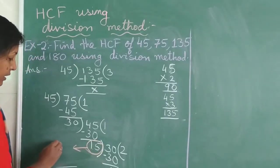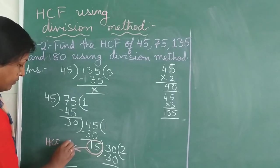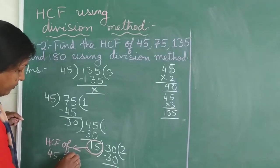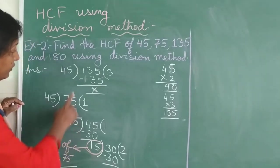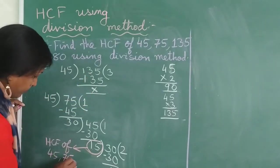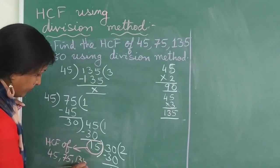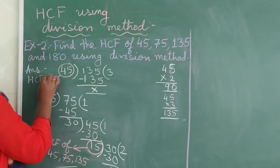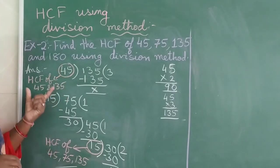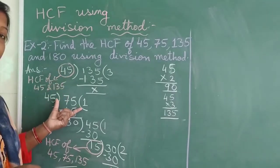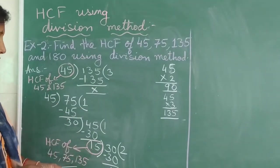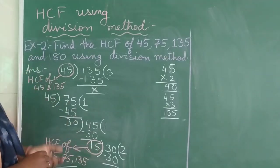So children, you could see we continue dividing if we did not get the remainder. And every time the remainder was not 0, that remainder becomes the divisor and the divisor becomes the dividend. You can see. And now we know our HCF of 45 and 75 is 15. So this is our HCF of 45 and 135, and then we divided with 75. We got the HCF of 45, 75 and 135 as 15. So next we will divide the 15 with the next number that is 180.